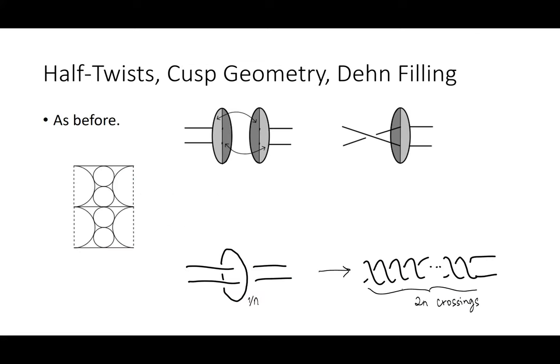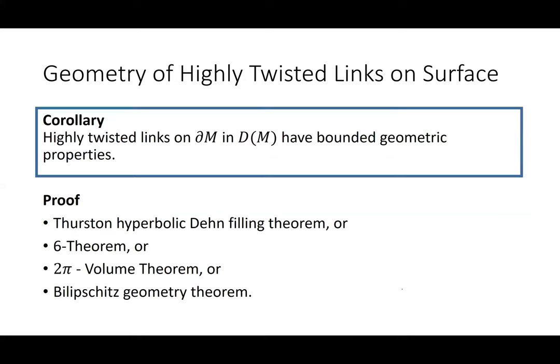Just as before, you can turn these into knots by adding half twists, getting rectangular cusps, performing Dehn fillings, and putting in as many crossings as you want. Those four theorems about Dehn filling will give you geometric results as you put in crossings, implying that highly twisted links have bounded geometric properties.